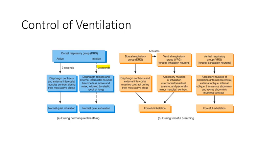If we want to breathe forcefully, we activate the ventral respiratory group. The dorsal respiratory group still does its normal job, but now the ventral respiratory group becomes active and triggers additional muscles. In addition to the diaphragm and external intercostals, we now get the sternocleidomastoid, scalene muscles in your neck, and pectoralis minor in your chest involved. When all of those muscle groups contract together, we get a forceful inhalation — that's what happens if you're told to take a big deep breath in.